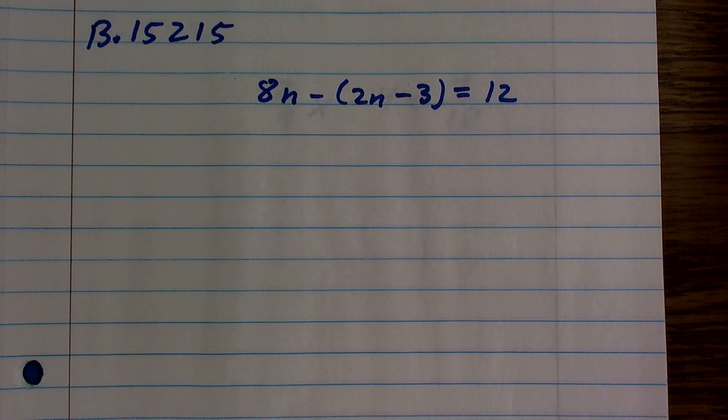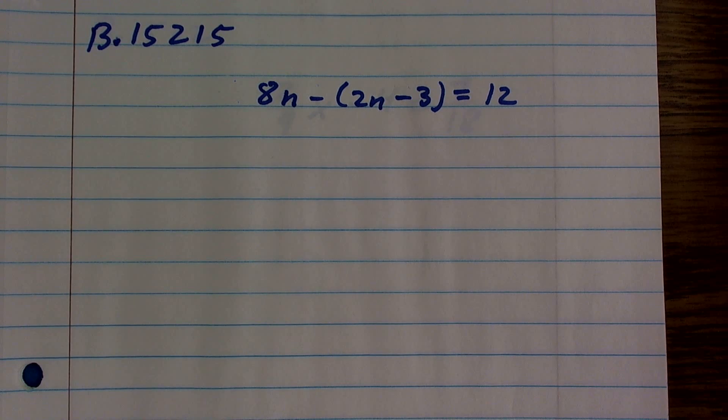All right, let's get through this problem. I have 8n - (2n - 3) = 12.